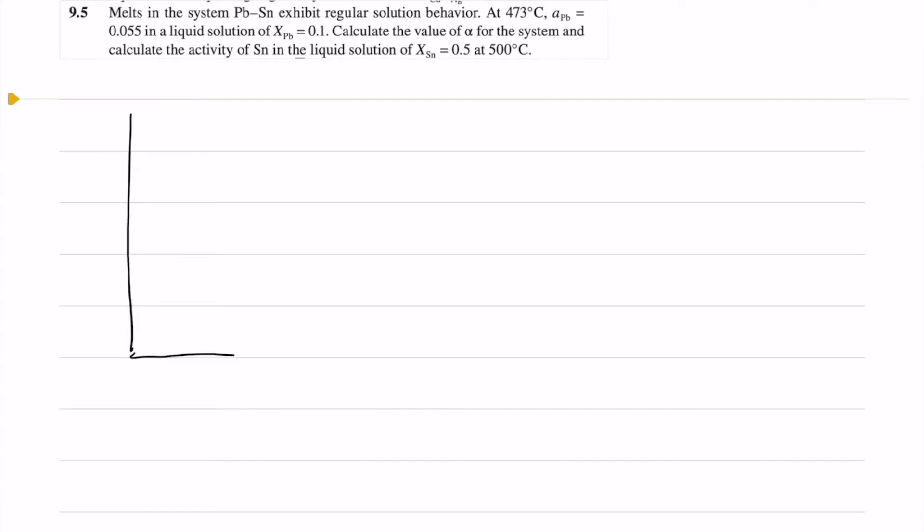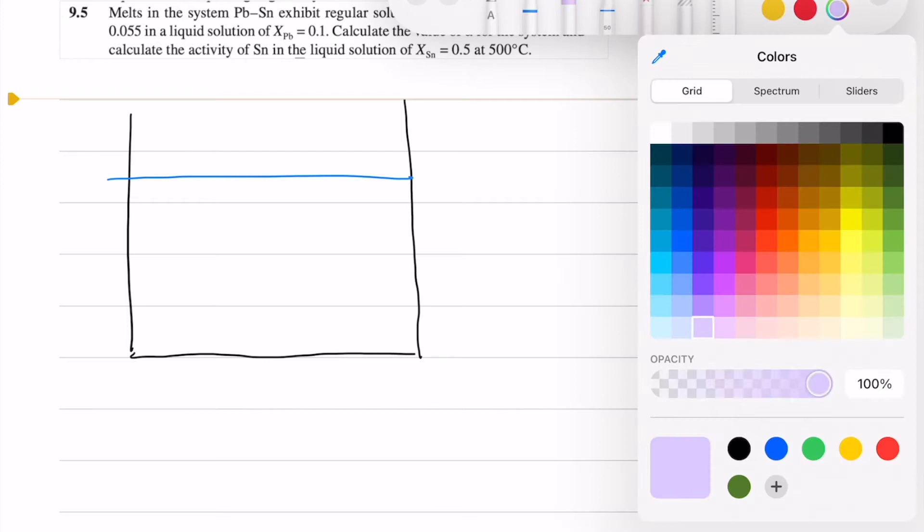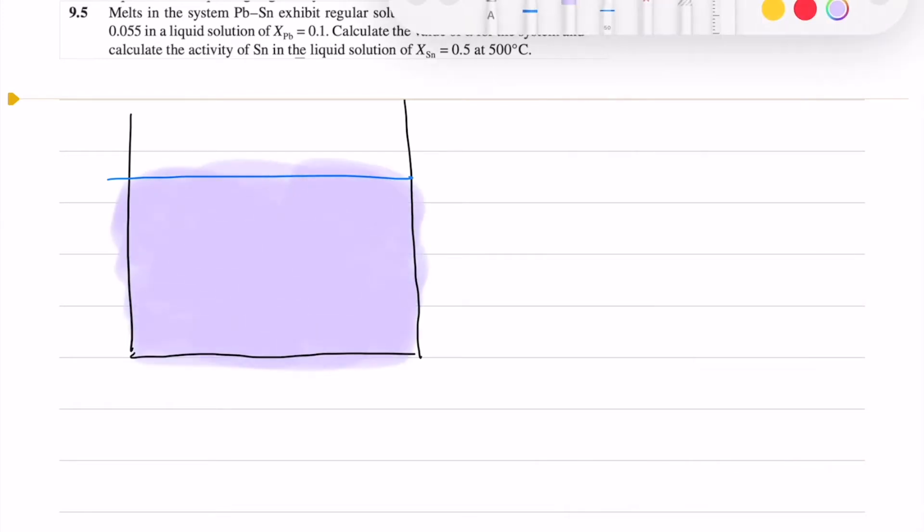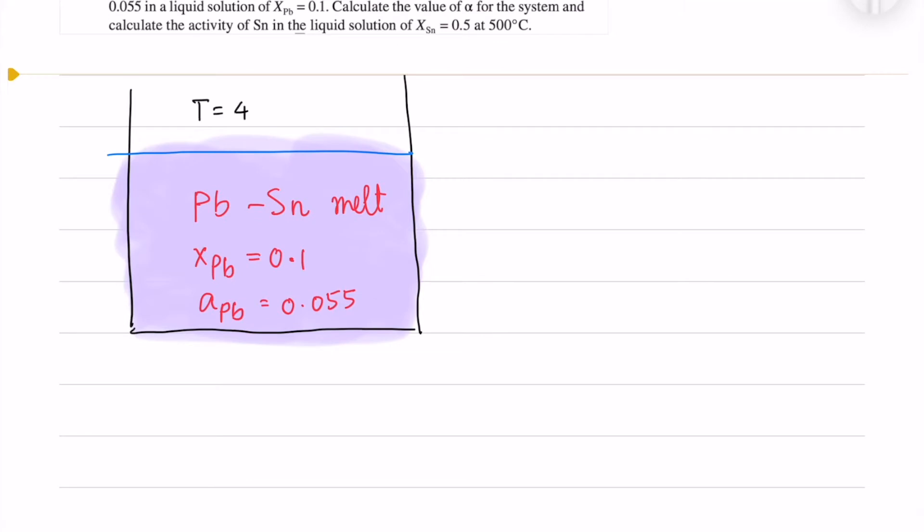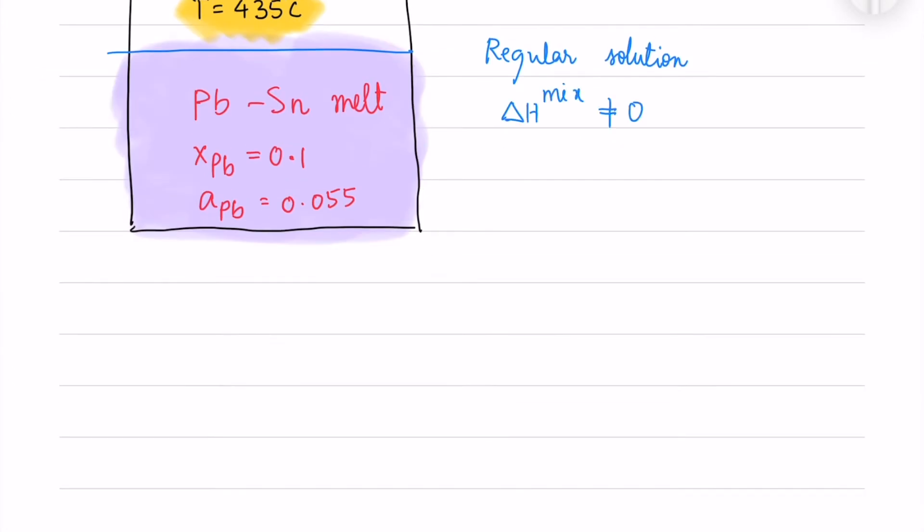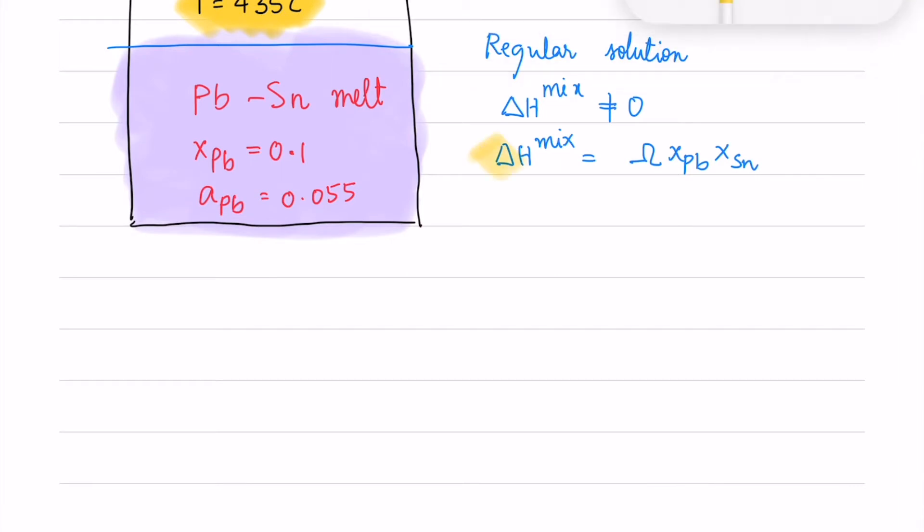In this question we are given a lead tin melt at temperature 473 degrees Celsius, and the mole fraction of lead is 0.1 and the activity of lead is 0.055. So this is a regular solution. The delta H-mix is not equal to zero. We have delta H-mix as omega times x_Pb times x_Sn.